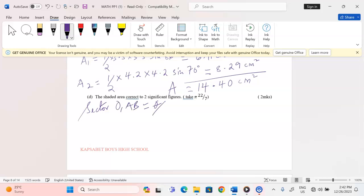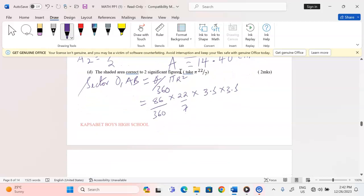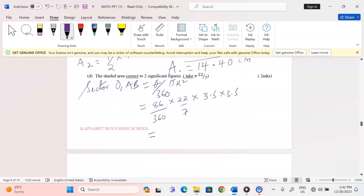Remember, area of a sector is given by theta over 360 times pi R squared. Therefore, when I take theta 86 out of 360 multiplied by pi, then radius 3.5 squared. I can take 86 multiplied by 22 multiplied by 3.5 multiplied by 3.5 then divide all this by 360 multiplied by 7.